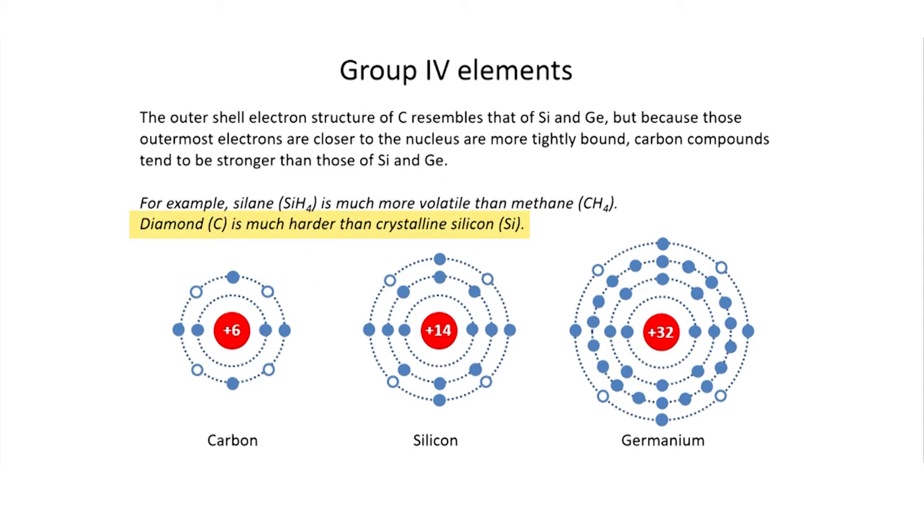Diamond is a lot harder than silicon, and it kind of makes sense, right? The atoms are closer together, so the bonds are a little bit stronger when they're combined into a solid.